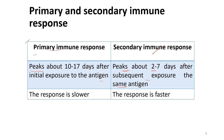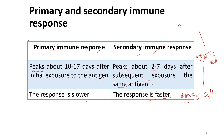During primary immune response, the response is slower because the body's immune system has never encountered the antigen before — it needs time to recognize it and select appropriate lymphocytes to be cloned. This is different from the secondary immune response, where the response is faster due to the presence of memory cells produced during primary immune response. Memory cells carry a copy of the antibody specific to that antigen, so when secondary immune response occurs, memory cells are quickly activated into effector cells, producing antibody faster.